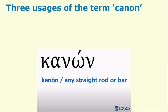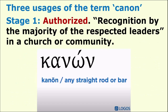Canon is a Greek word meaning any straight rod or bar by which any object may be measured. Canon follows three stages. At one point, a book or writing is authorized — that is, recognition by the majority of the respected leaders in a church or community.